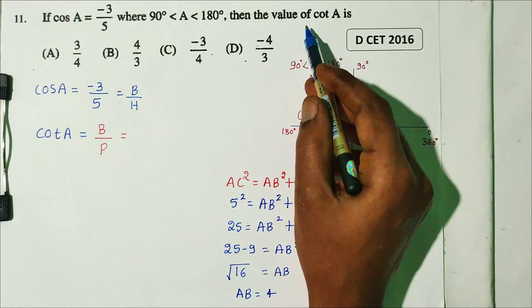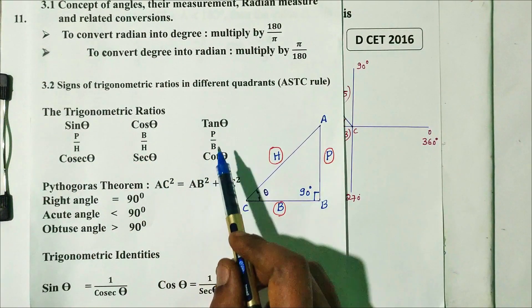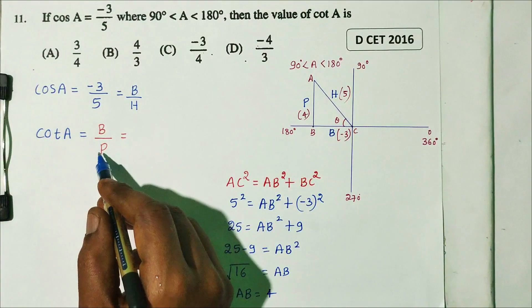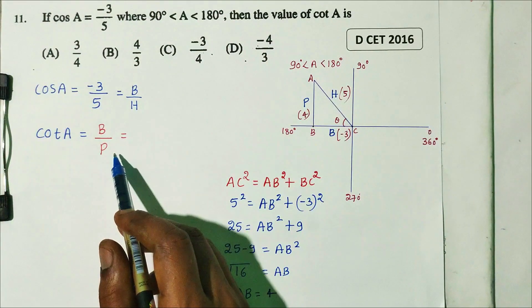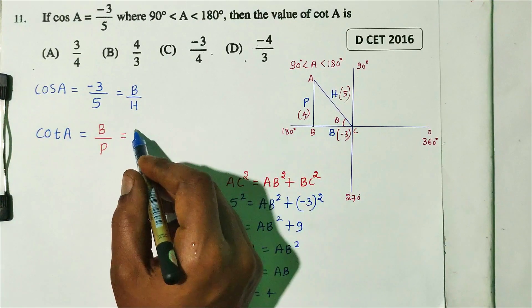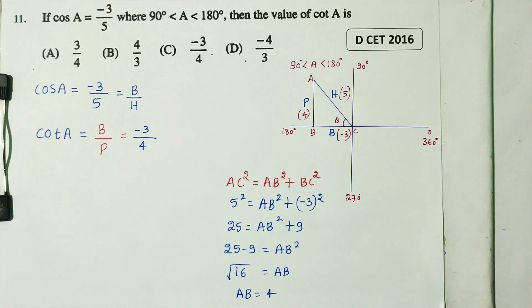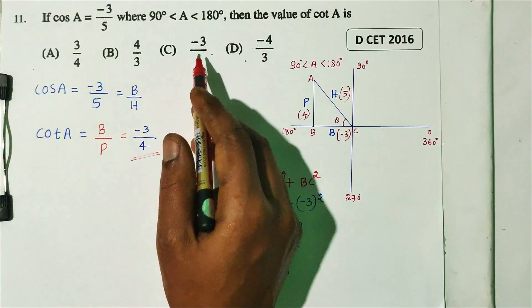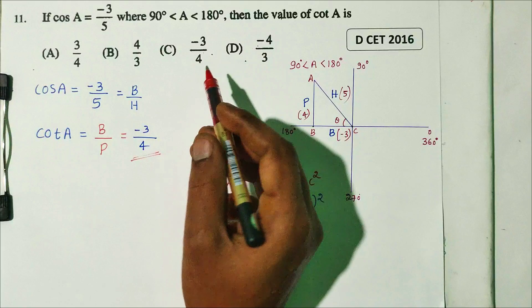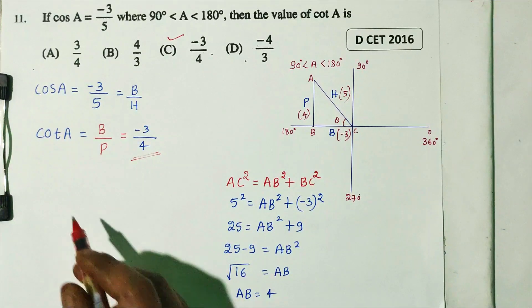Now we have all three sides. To find cot A: cot A equals base divided by perpendicular, which is minus 3 divided by 4. So the correct answer is option C: minus 3 divided by 4.